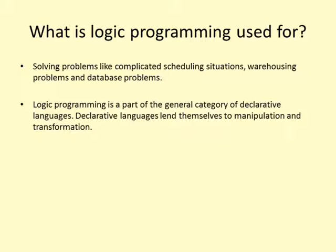Declarative languages describe what the program should accomplish rather than describing how to go about accomplishing it. Logic programming has an attribute that all declarative languages have, which is that they lend themselves to manipulation and transformation. For example, a program can be written in one form and transformed into a different form to produce another program that will run more efficiently, either for the same task or for a similar one.